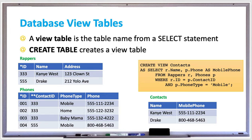In this example, we have a few tables — wrappers and phones. In the SQL statement, we say CREATE VIEW called contacts AS SELECT r.names, grabbing the names from wrappers and phones from the phones table where the IDs match up and the phone type is set to mobile.